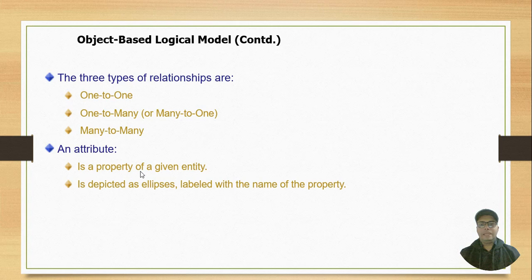An attribute is a property of a given entity. For example, if we have an entity like student, the student has student ID, name, email, contact, gender, program, city, and so on. An attribute is depicted as an ellipse labeled with the name of the property.